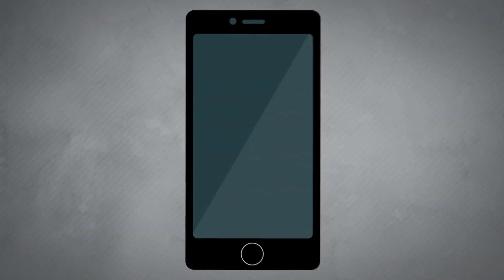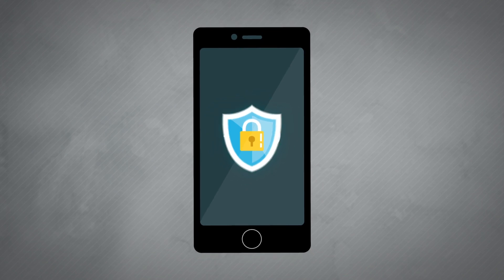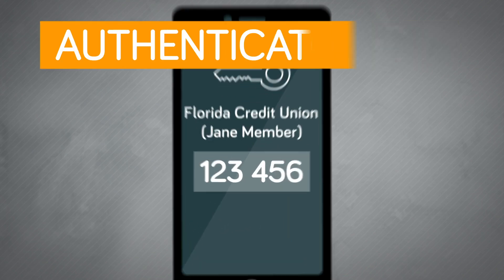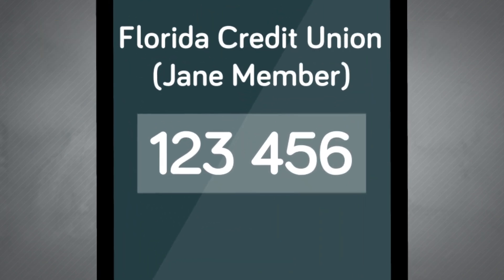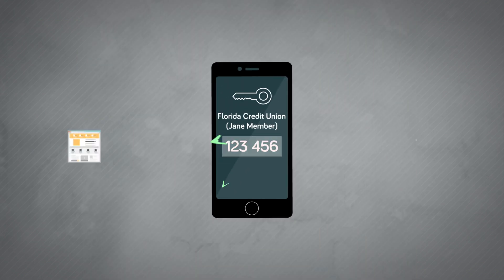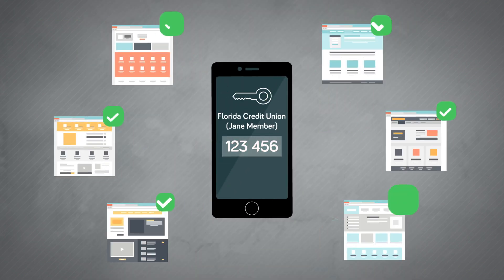The newest and most secure method to verify your identity is to use an authenticator app. Authenticator apps provide you a time-based one-time passcode you can use to access websites that require two-factor authentication.